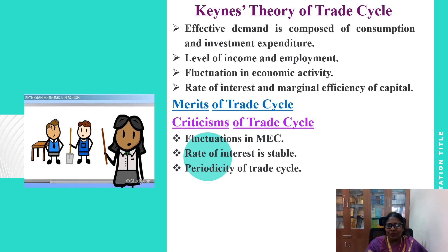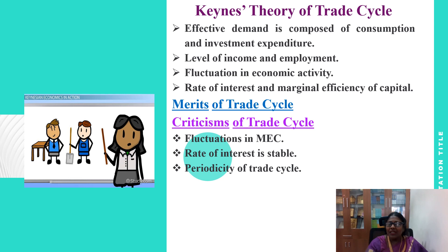Keynes believes that consumption expenditure is stable, and it is fluctuation in investment expenditure which is responsible for changes in output, income, and employment. Investment depends on the rate of interest and marginal efficiency of capital. Since the rate of interest is more or less stable, marginal efficiency of capital determines investment.